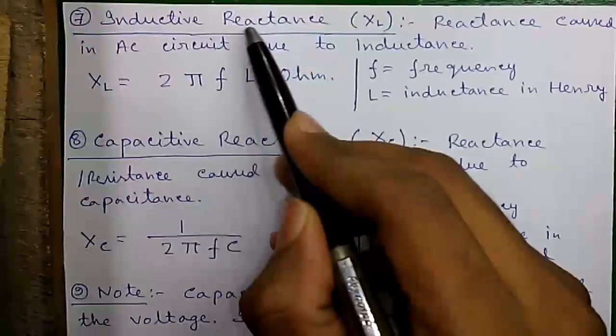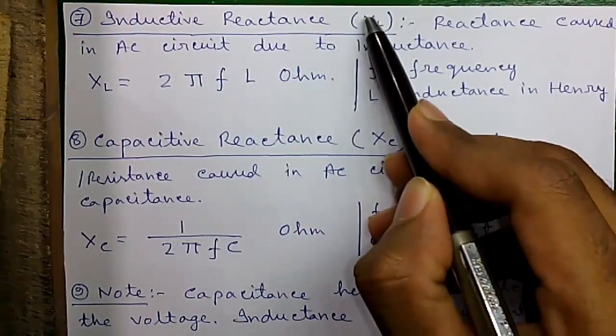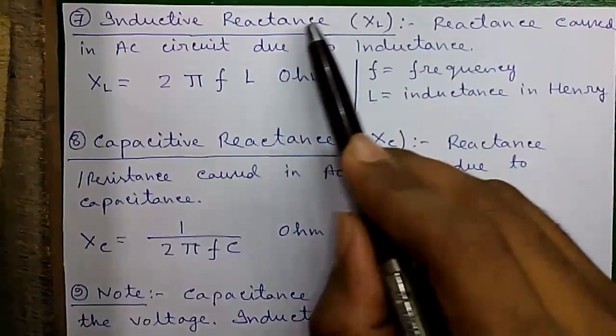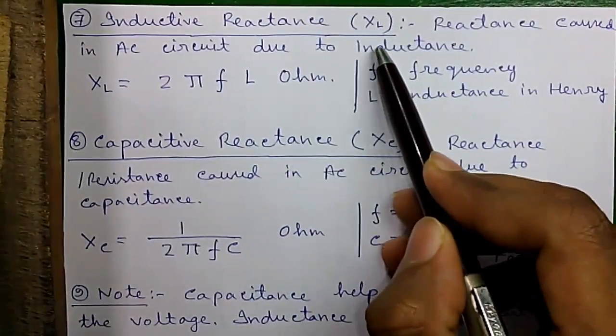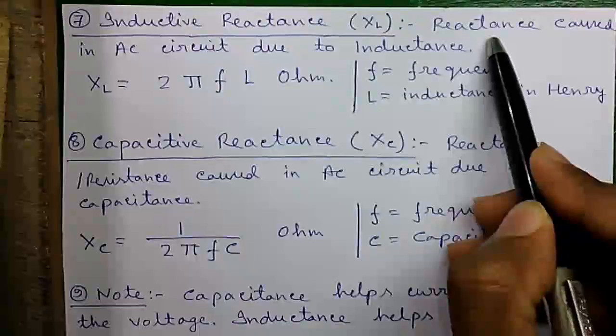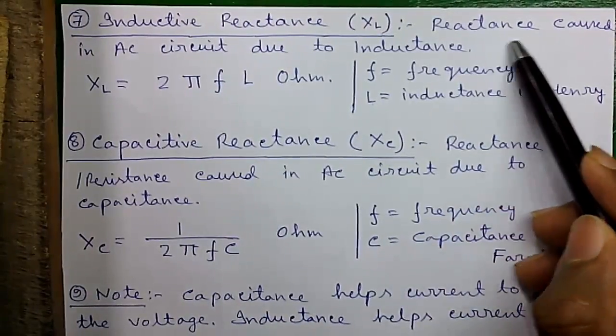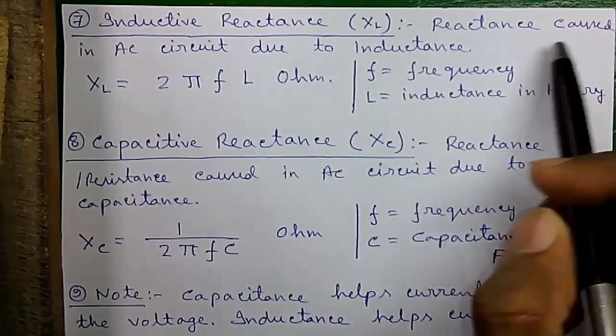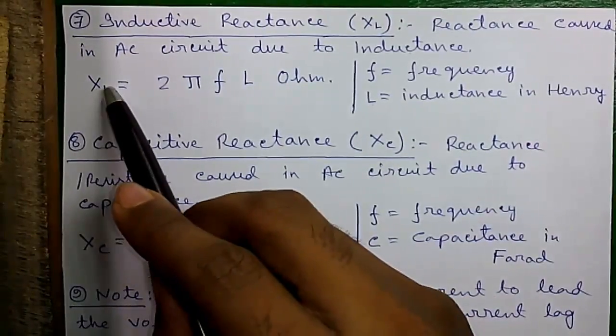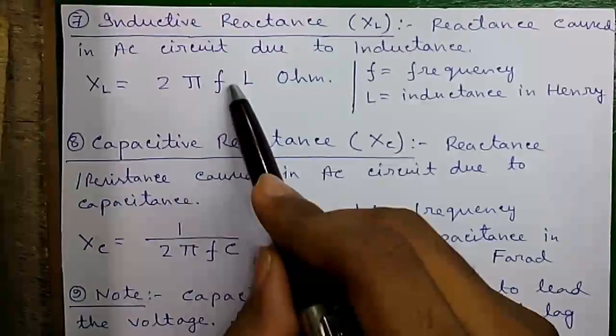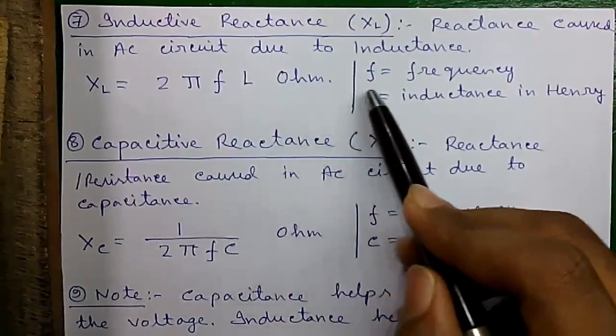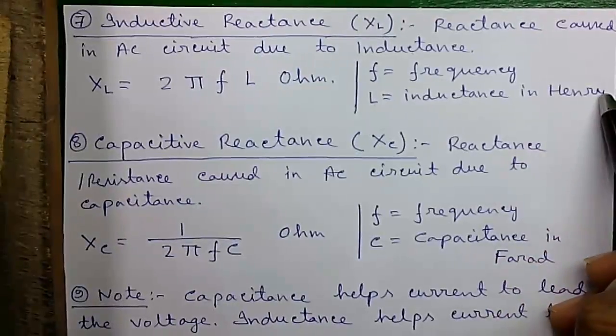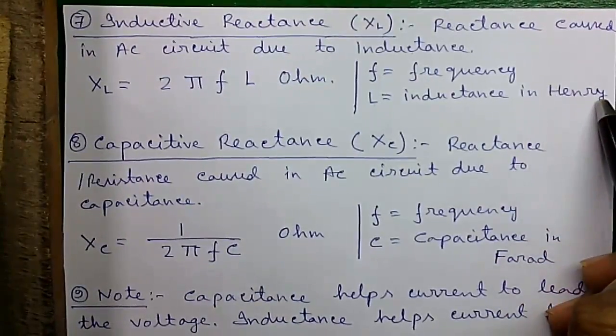Formula number 7, inductive reactance also called X subscript L. The reactance or resistance caused in AC circuit due to inductance present in the circuit. One common example of inductance is the magnetic choke in your home tube light or fluorescent light. XL equals 2 pi FL ohm where F is the frequency and L is the inductance in Henry.